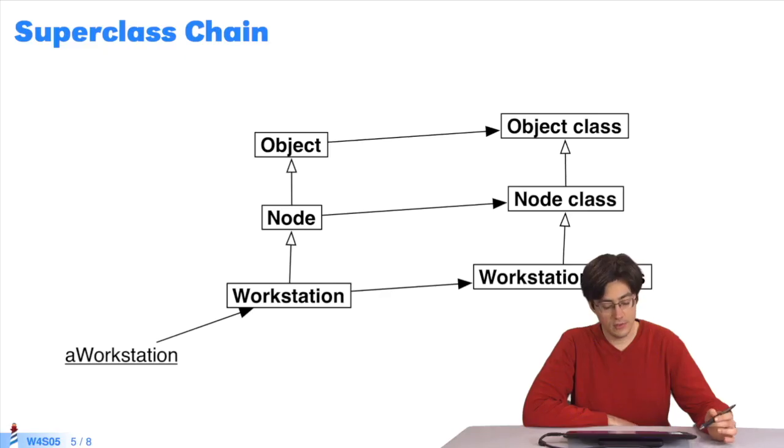Here are a few examples. Here, the object a workstation is an instance of workstation class. Workstation is a subclass of node, a subclass of object.